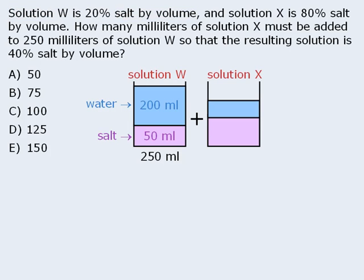Next we have solution X, which we will also draw with the salt and water separated. Since we are trying to determine the required volume of solution X, let's say that there is x milliliters of this solution. The question tells us that solution X is 80% salt by volume. So if there is x milliliters of this solution and 80% of this volume is salt, then we know that there is 0.8x milliliters of salt in the solution.